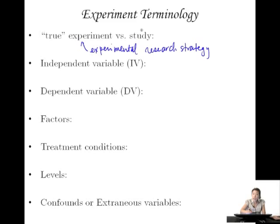If it's a correlational design, can it be an experiment? No, it can only be a study. Whereas an experiment can actually also be called a study. So you just have to be careful about how you use those words from now on.